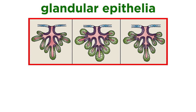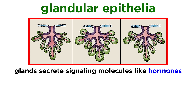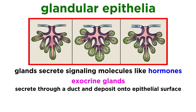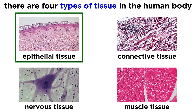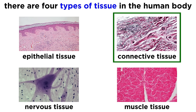Before moving on, we must mention glandular epithelia. These are different from the types we have just mentioned, and they are found in glands, which are collections of one or more cells whose purpose is to generate and secrete specific substances, often signaling molecules like hormones. These glands can be exocrine glands, which produce and secrete substances through a duct onto an epithelial surface, or endocrine glands, which secrete their products directly into the blood. We will talk about the endocrine system later in the series, as well as a variety of exocrine glands as they become relevant. That wraps up our introduction to epithelial tissue, so let's move on to the next type, connective tissue.